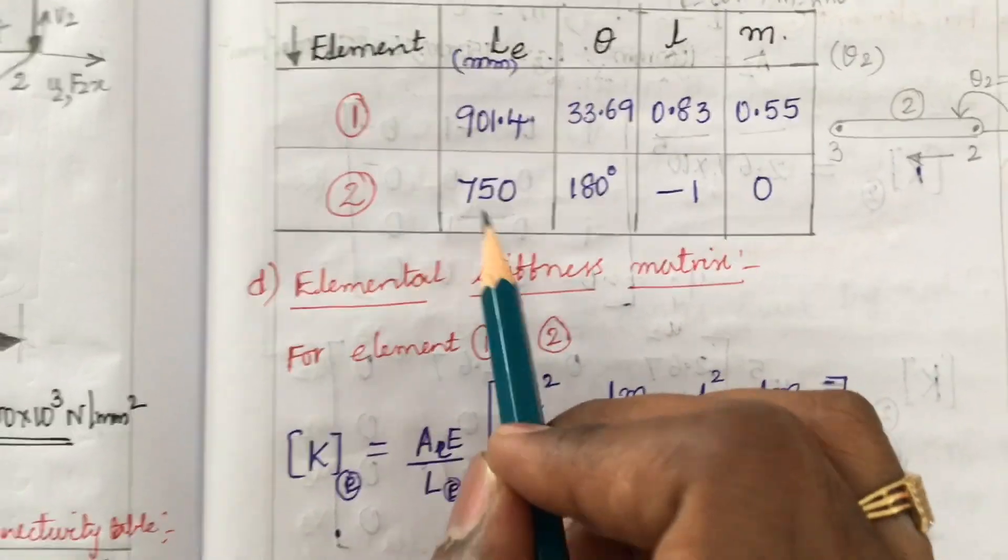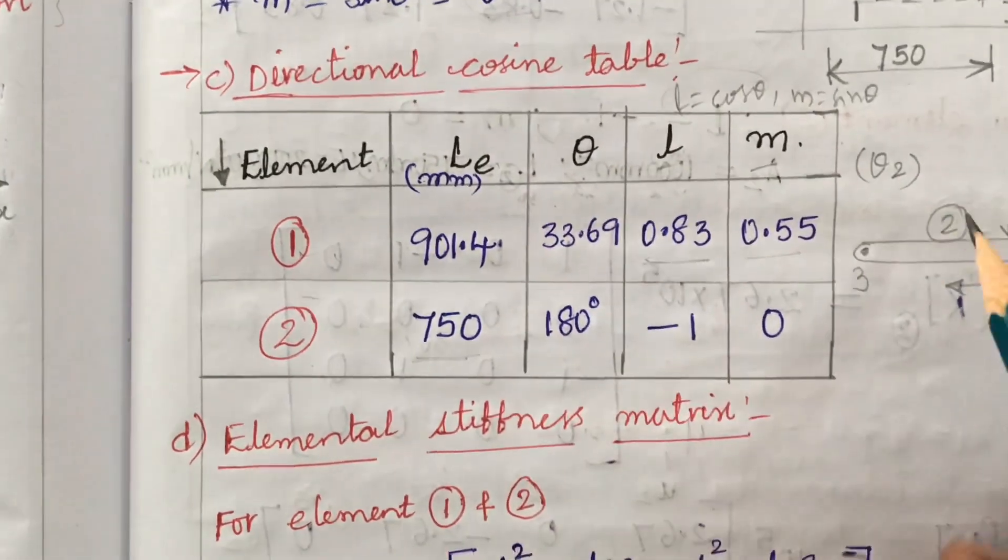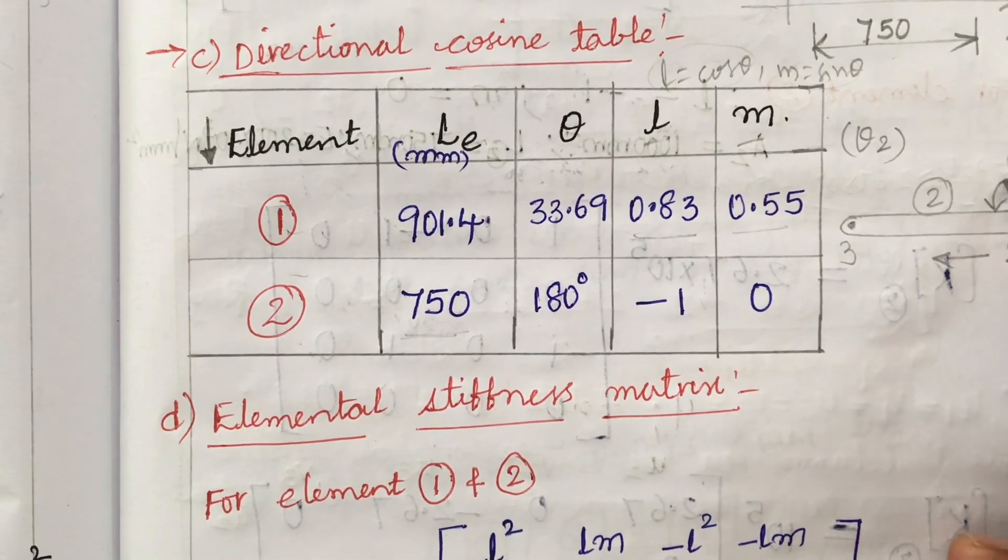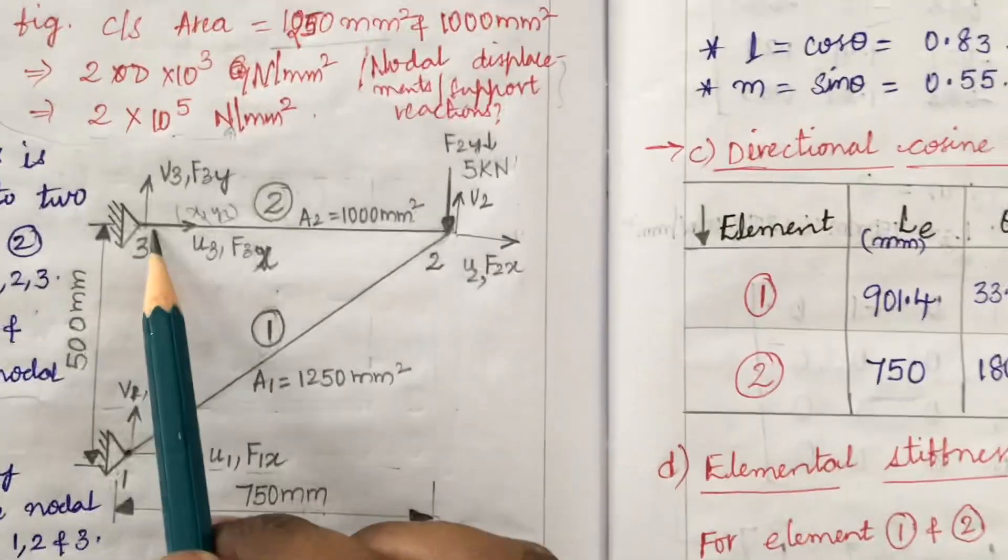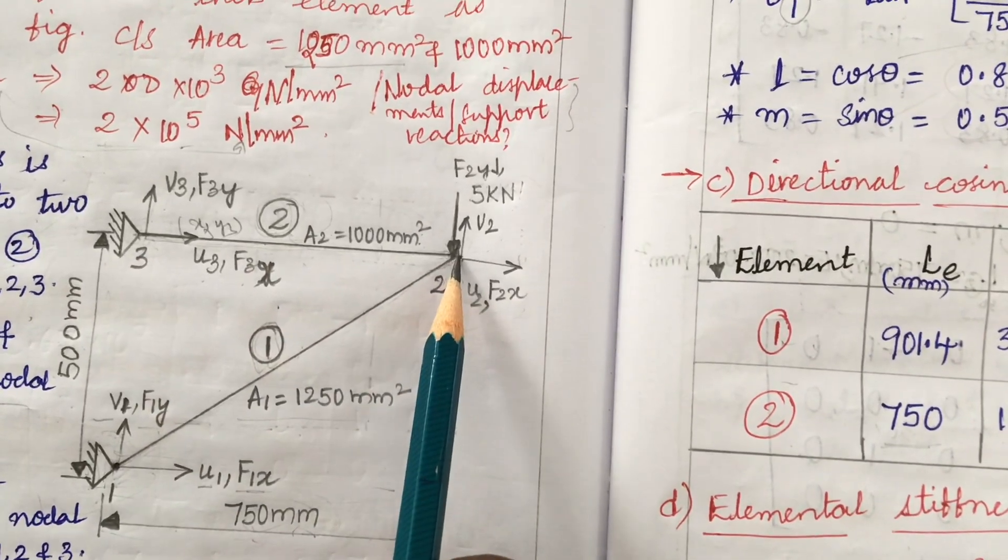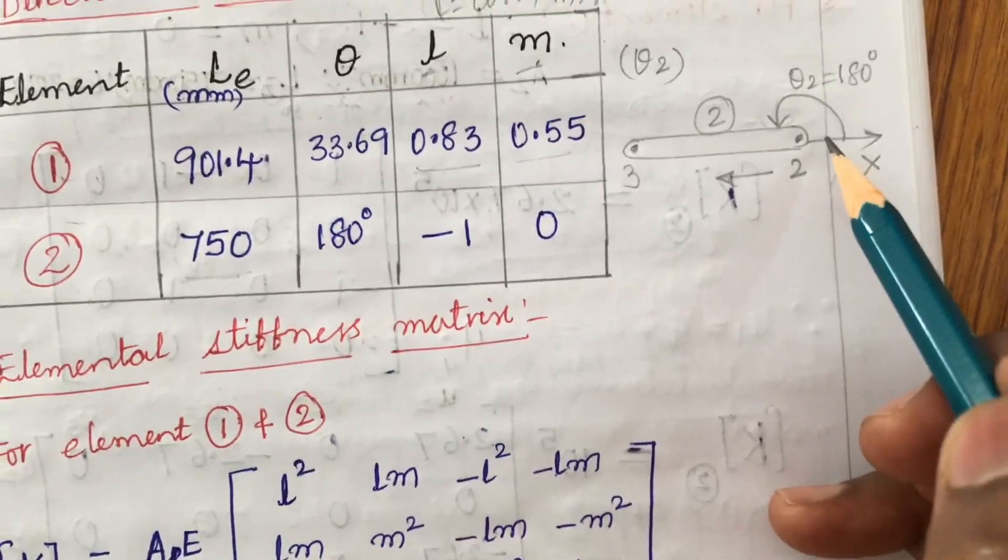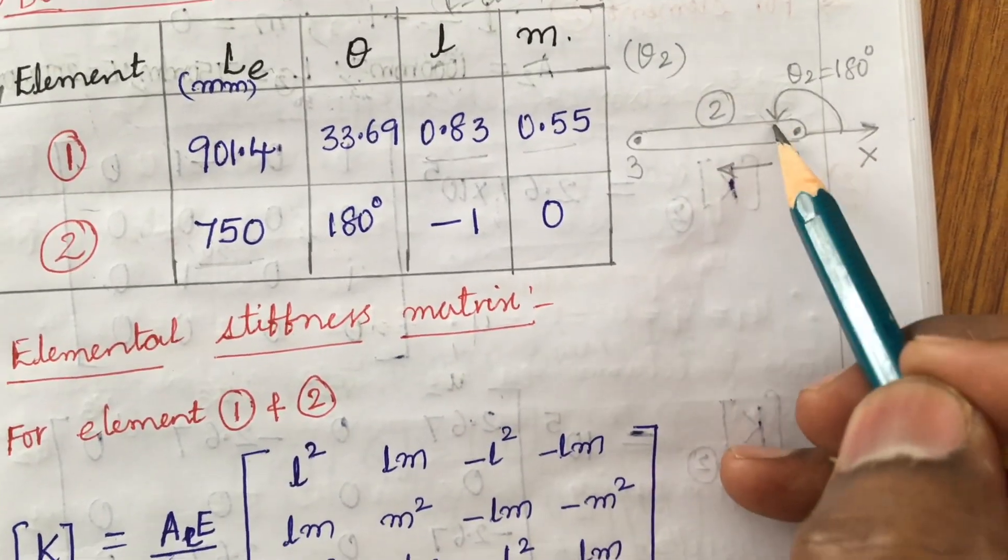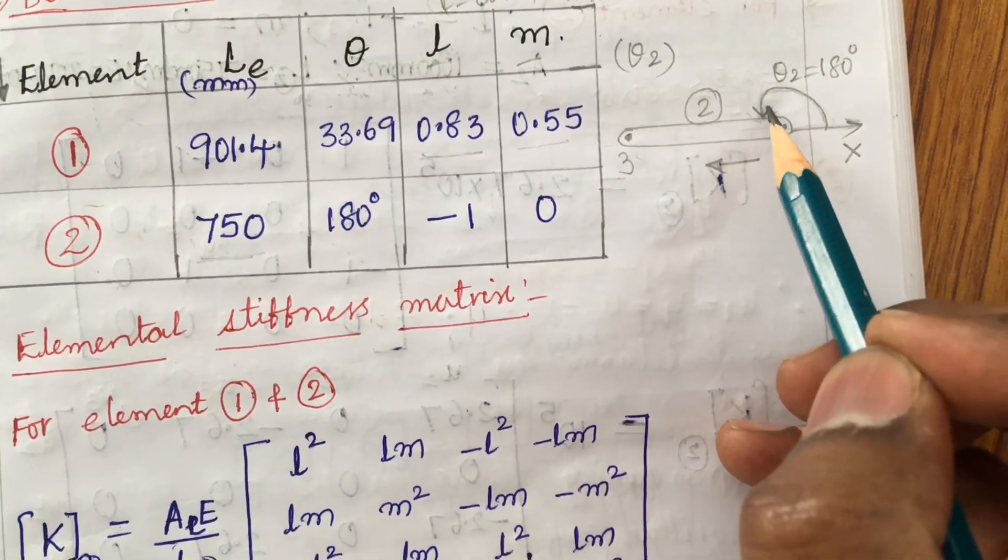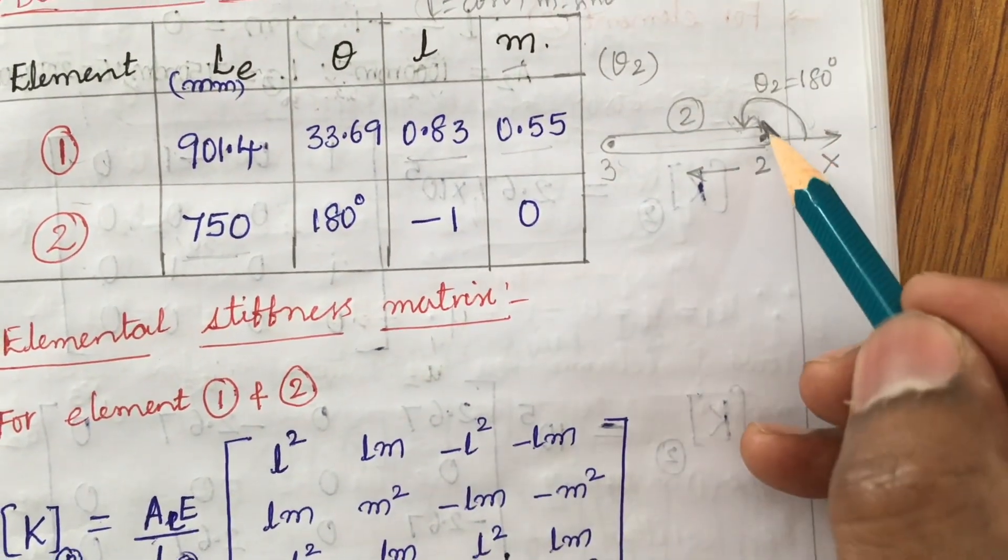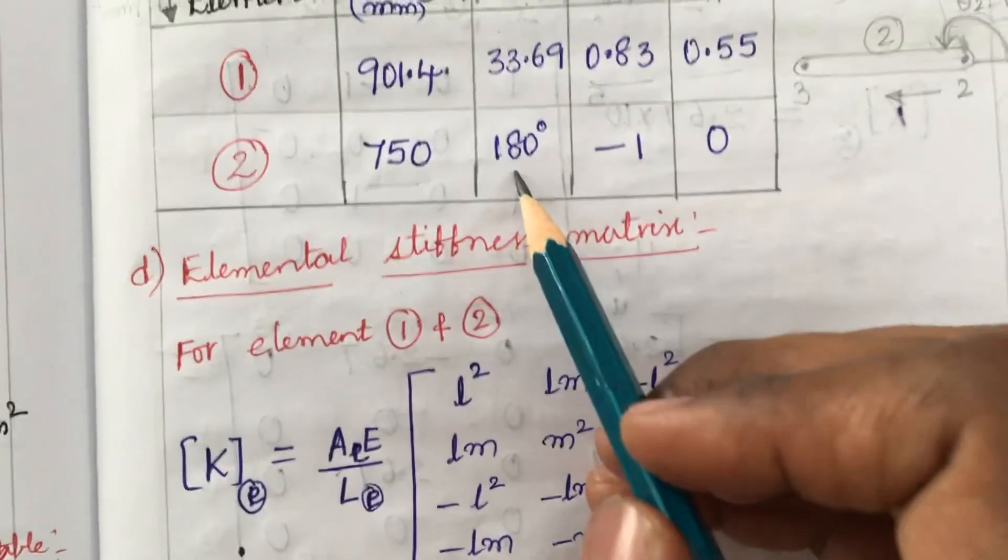L equal to cos theta: substitute theta 1, that is 0.83. M is 0.55. Theta 1 is for element 1. The length of the element we already calculated. Next, element 2: length is 750. Theta is nothing but the distance measured from the x-axis, global axis plus x. Element 2 is the straight line bar at nodes 2 and 3, along the x-axis is 180 degrees.